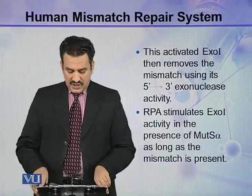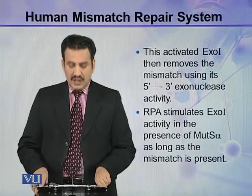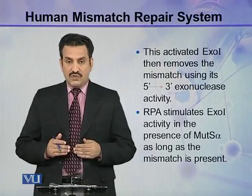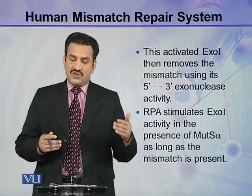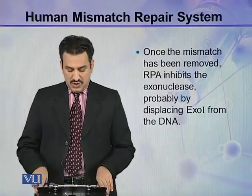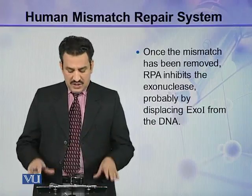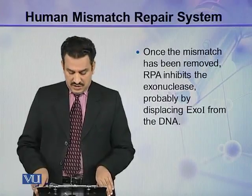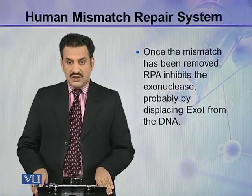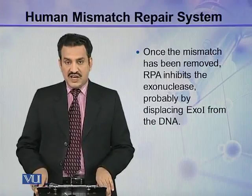RPA stimulates Exo-1 activity in the presence of MutS-alpha as long as the mismatch is present. So if the mismatch is present, RPA stimulates the activity of Exo-1, which starts hydrolyzing the strand. Once the mismatch has been removed, RPA inhibits the exonuclease — when the mismatch is removed, the exonuclease is inactivated, probably by displacing Exo-1 from the DNA. In this way, RPA inhibits the exonuclease.